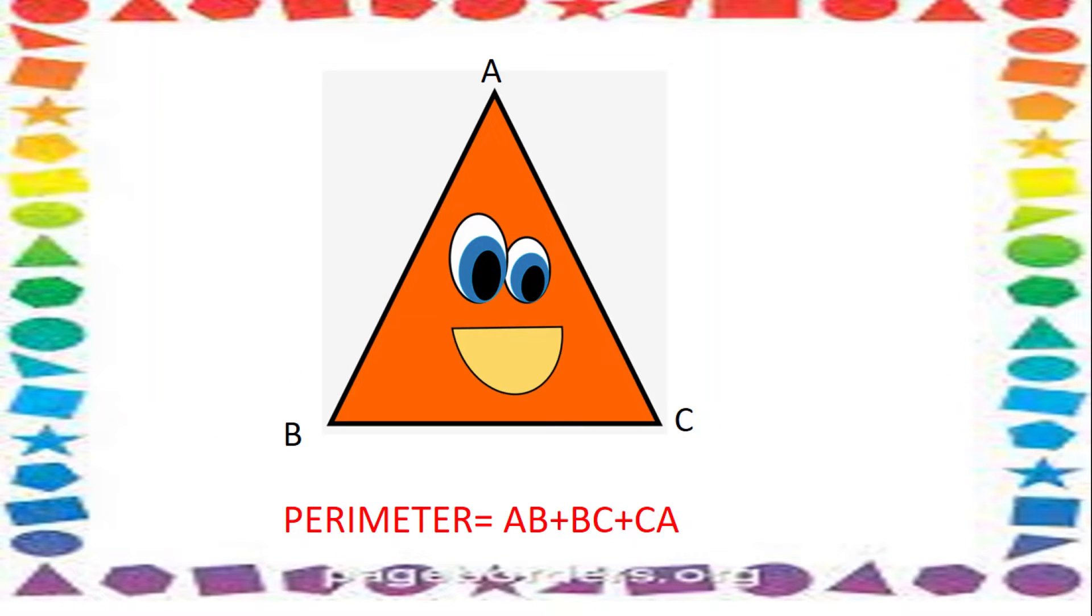Similarly, in case of a triangle, perimeter is equal to all its three sides: AB plus BC plus CA.